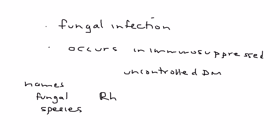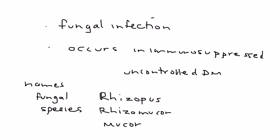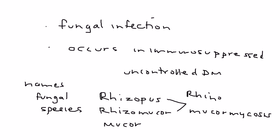There's Rhizopus, there's Rhizomucor, and there's Mucor. The most common cases are caused by the first two, and they cause a type of mucormycosis known as Rhino-cerebral.